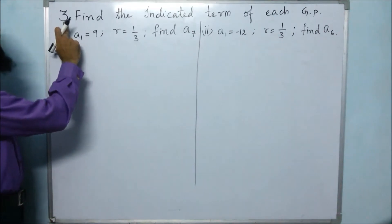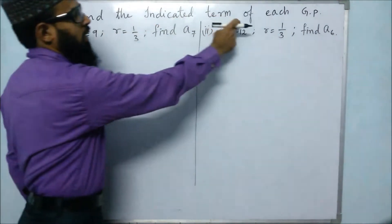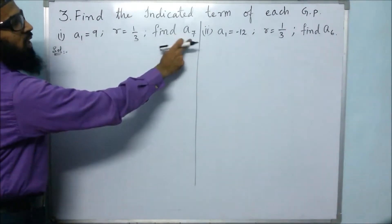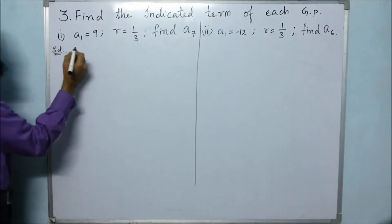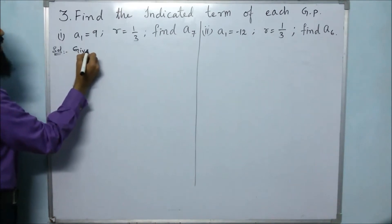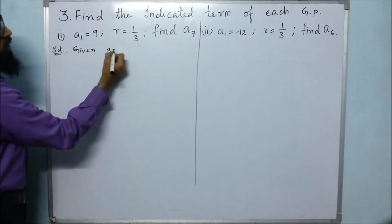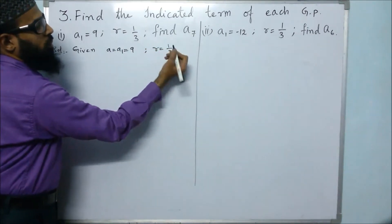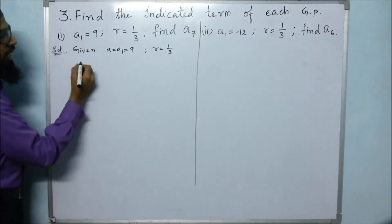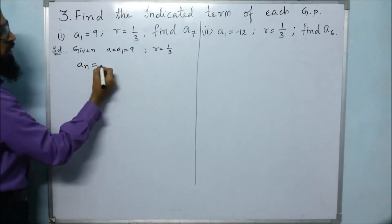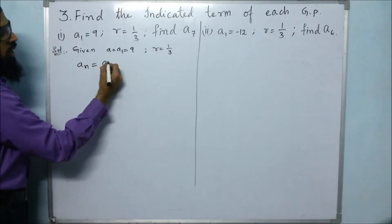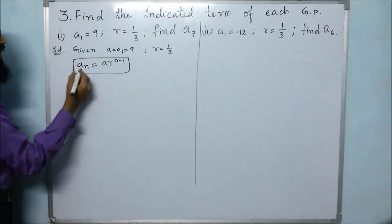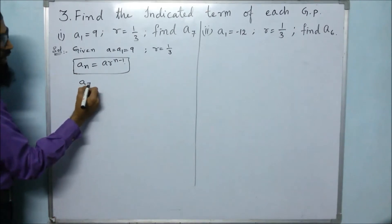This is the third problem. Find the indicated term of each GP. In this GP we have to find the seventh term. The first term given is a1 equals 9 and the common ratio r equals 1 by 3. We know the nth term formula in GP is a_n equals a times r to the power of n minus 1.